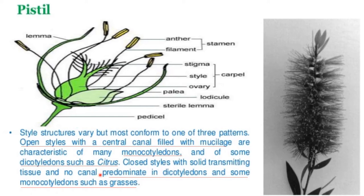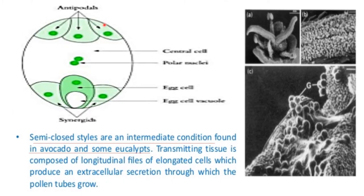Ovaries contain one or more ovules with integuments which form the micropyle, the surrounding nucellus, and embryo sac. After meiosis, the haploid egg cell along with two synergid cells and a central canal containing two polar nuclei and three antipodal cells is produced by mitosis during embryo sac formation. A normal mature embryo sac therefore contains seven cells and eight haploid nuclei overall.